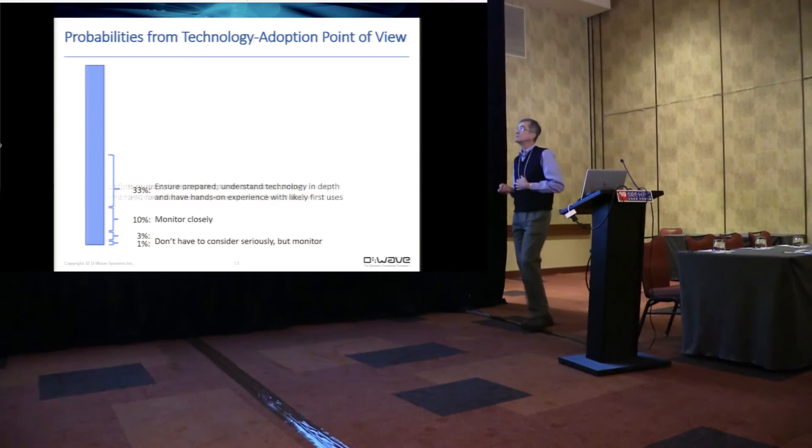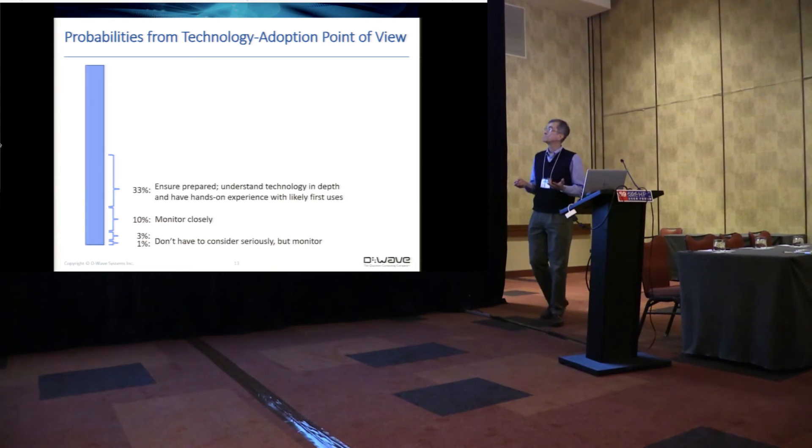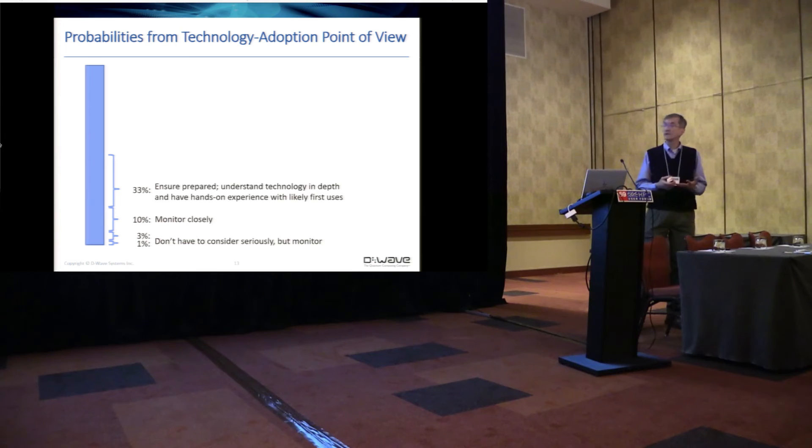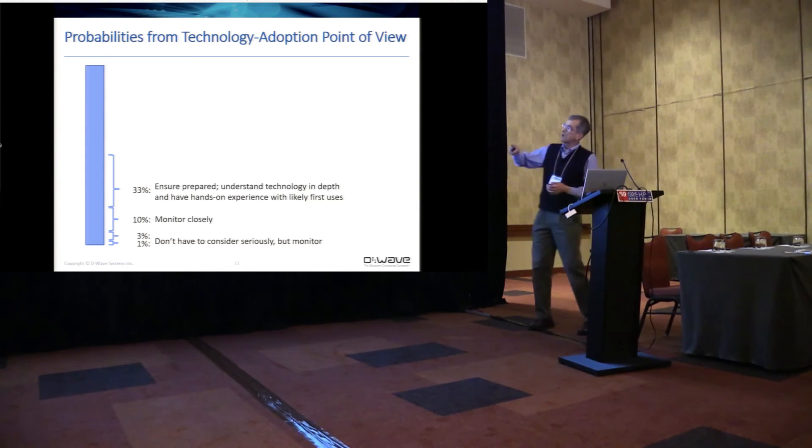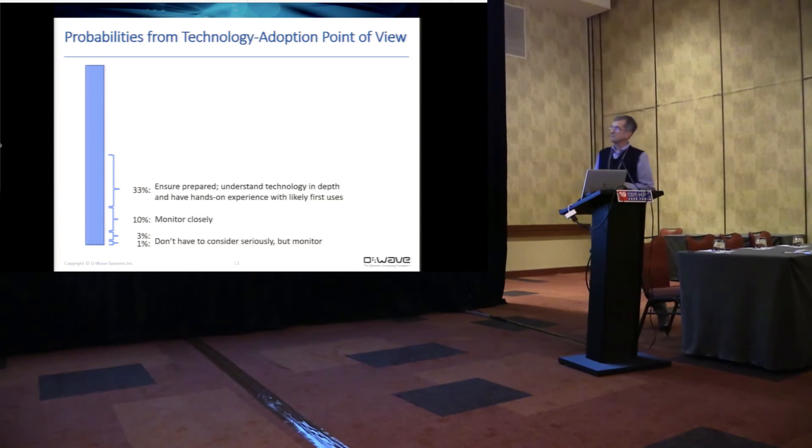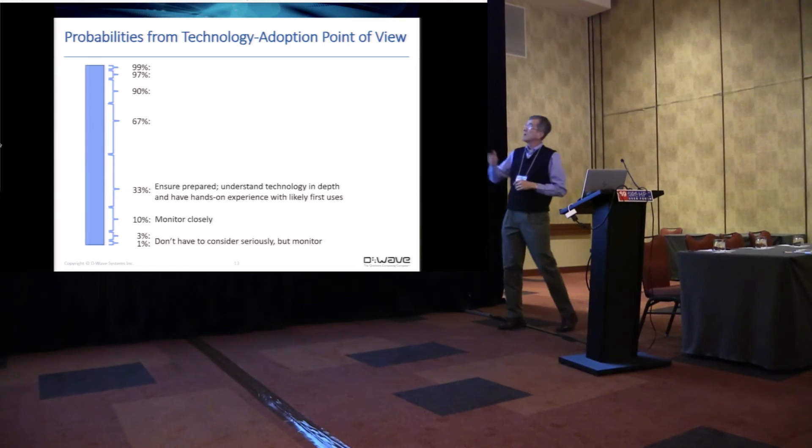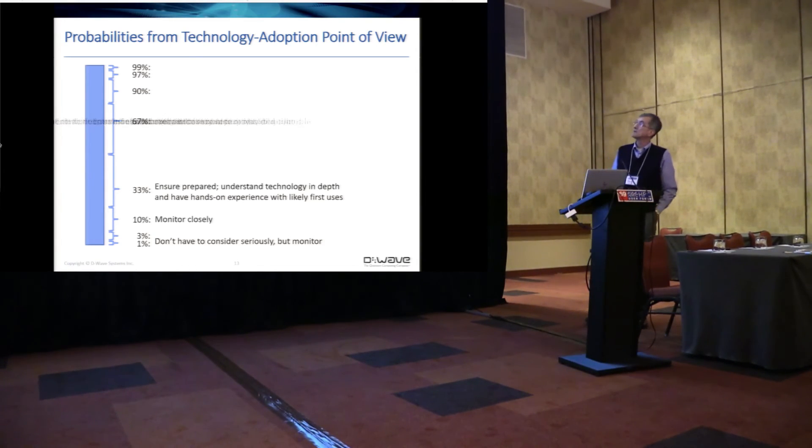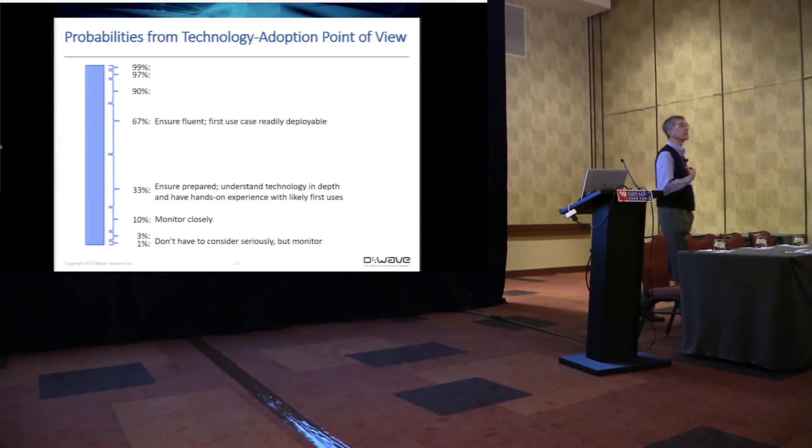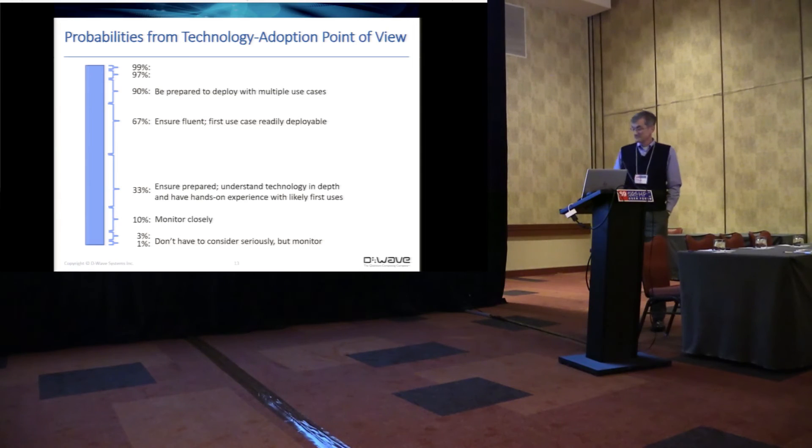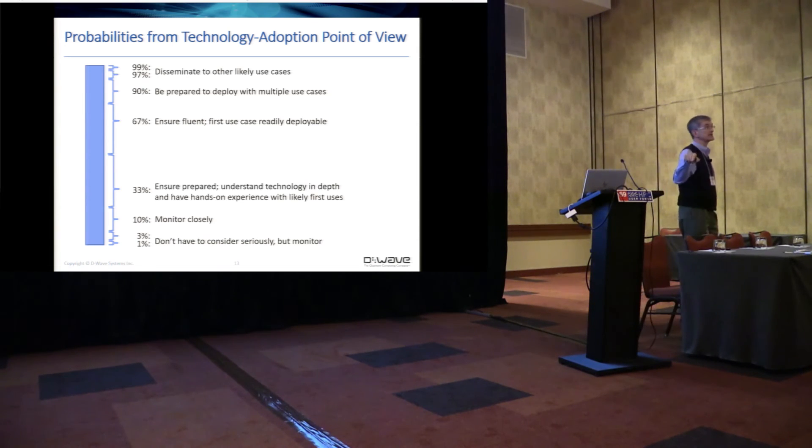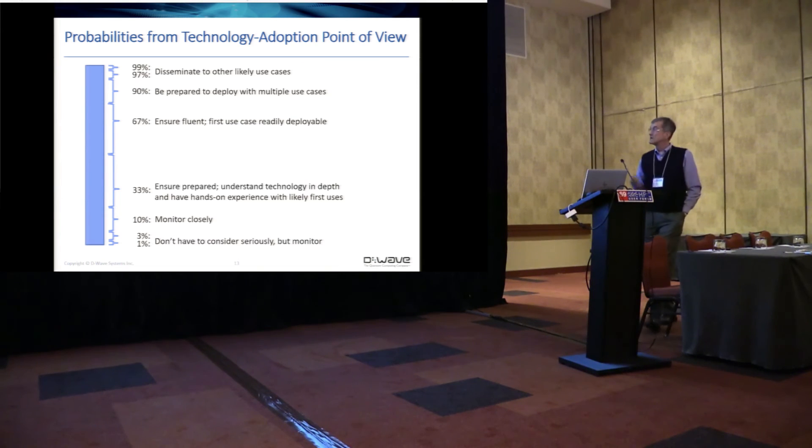At 33 percent, you need to be really pretty seriously prepared. You want to understand the technology in depth, and for me, I'd want to have hands-on experience with likely first uses. And when I go to the top half of this, the 50 to 100 percent range, I just kind of flip the probabilities. At two-thirds, at 67 percent, you really should, for me, I want to know that I'm pretty fluent in the technology, or appropriate people in the organization, and have a first use case that is readily deployable. At 90 percent, probably want to be ready to deploy with multiple use cases, and at 99 or 97, you want to disseminate to other parts of the organization so they can get the third and fourth and nth use cases using. So, this is the way I think of this.